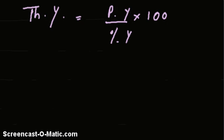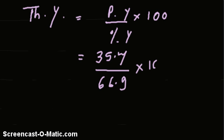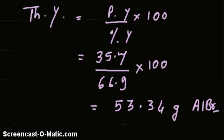Theoretical yield is equal to practical yield divided by percent yield, multiplied by 100. Theoretical yield is to be found. Practical yield is 35.7 grams and percent yield is 66.9%. This gives us a theoretical yield of 53.34 grams of aluminium bromide.